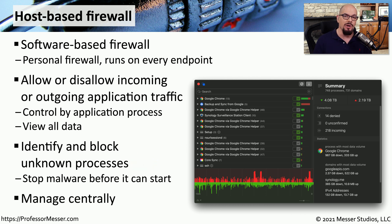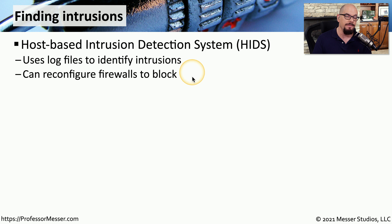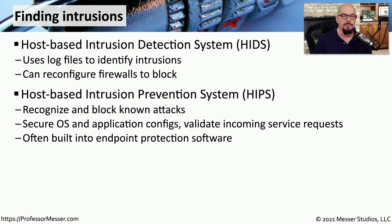It's also common to manage all of these endpoints centrally, so that you can put host-based firewalls on all your devices and manage them from one single point. Another type of software for endpoints is a host-based intrusion detection system, which looks through log files to identify intrusions and can reconfigure firewalls or other security devices to prevent additional attacks. These days, it's more common to have a host-based intrusion prevention system, or HIPS, which has a known set of vulnerabilities it looks for and can block inbound attacks immediately before they hit the operating system.